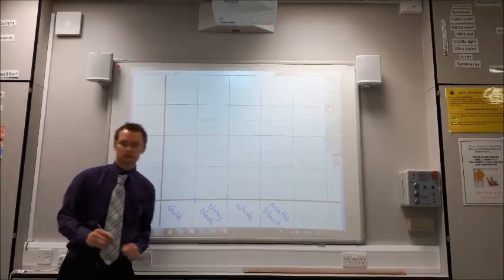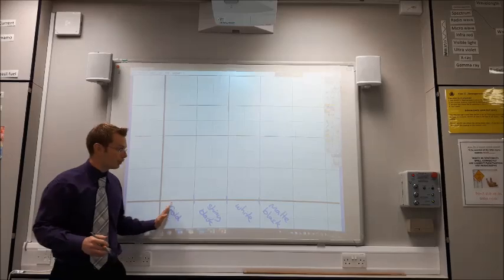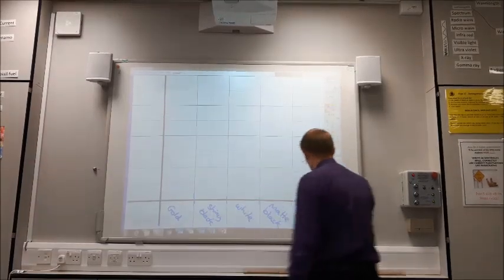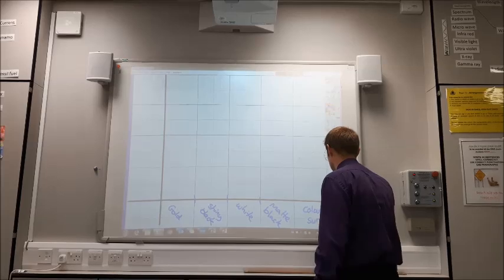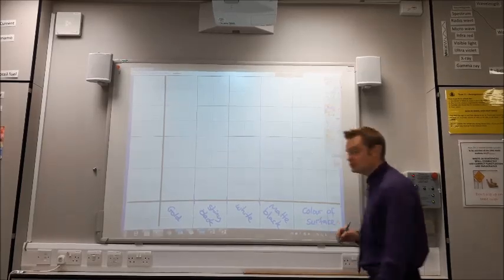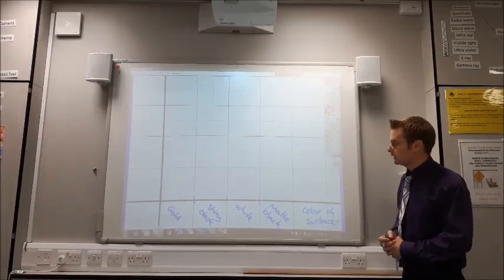So, I've labeled up my axes, but I haven't included a proper label to say what this is. So, I'm going to say colour of surface. Now, there's no unit for colour of surface, so I don't have to include a unit here.